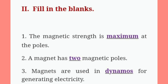Roman numeral II — fill in the blanks. First one: the magnetic strength is maximum at the poles. Second one: a magnet has two magnetic poles. Third one: magnets are used in dynamos for generating electricity.